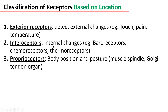Then interoceptors detect internal changes. These include baroreceptors, which respond to arterial stretch, and chemoreceptors, which are sensitive to chemicals like partial pressure of oxygen. Thermoreceptors detect temperature within the body; all are stimulated by internal changes.